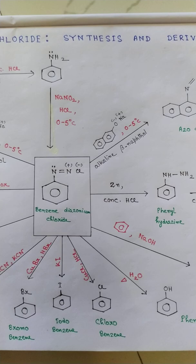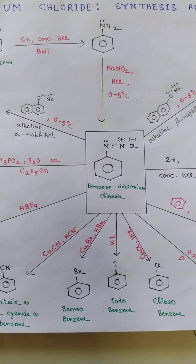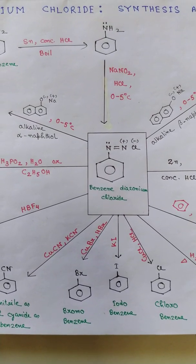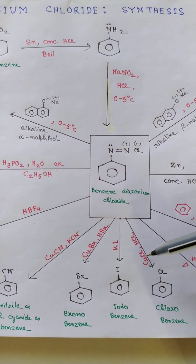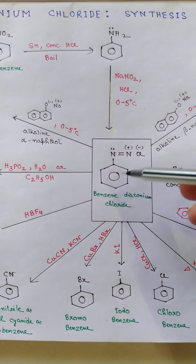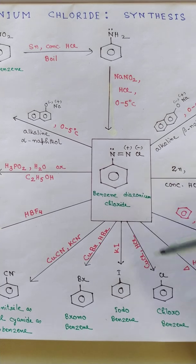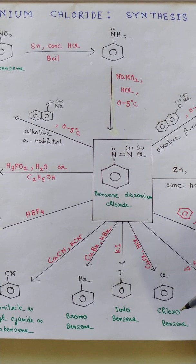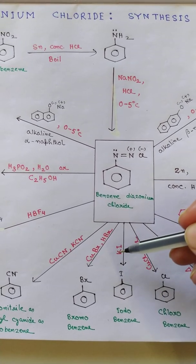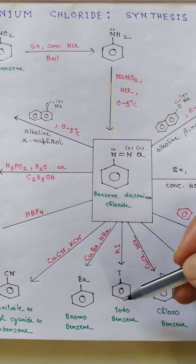Now from this benzene diazonium chloride, we have all the four haloarenes. If we give CuCl, HCl to the solution containing benzene diazonium chloride, we have chlorobenzene. If we apply KI, potassium iodide, we have iodobenzene.